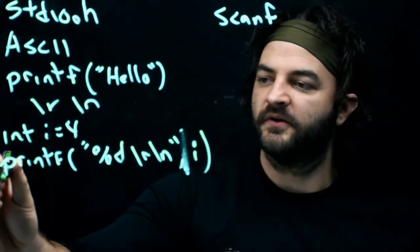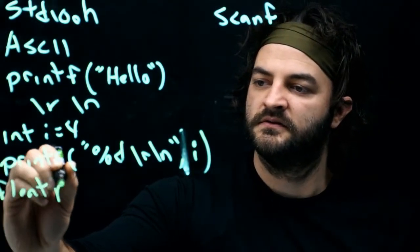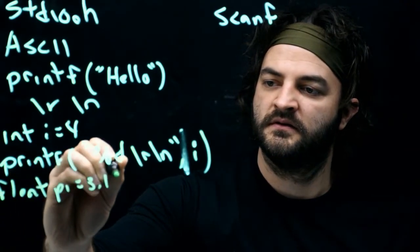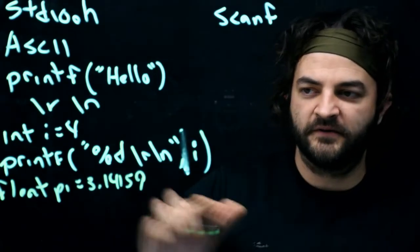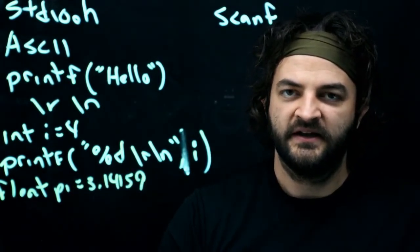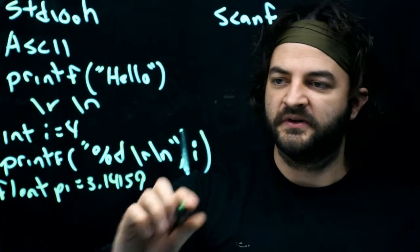We could do the same thing with a floating-point number. Often the floating-point numbers could go very long. So how do we specify how many decimal points we would like to print?